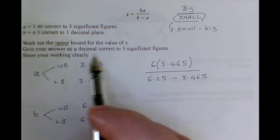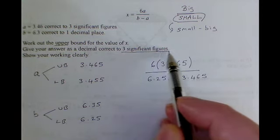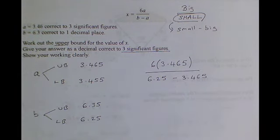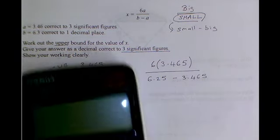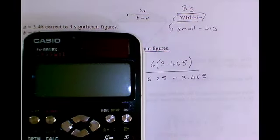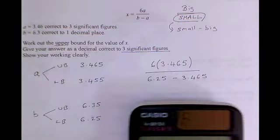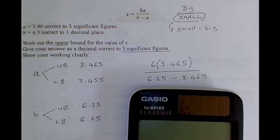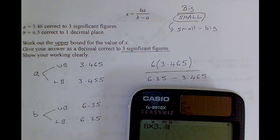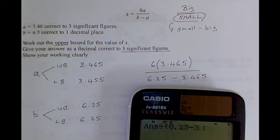That way, when I put it into my calculator, I'm going to get the largest possible value, the upper bound of x. So let's have a go. So 6 times by 3.465 divided by the difference between 6.25 and 3.465.